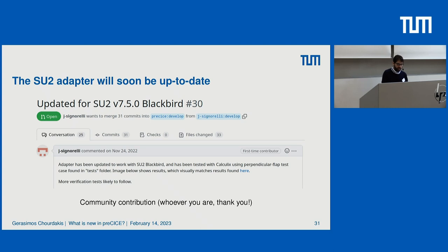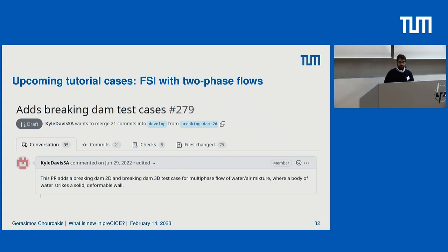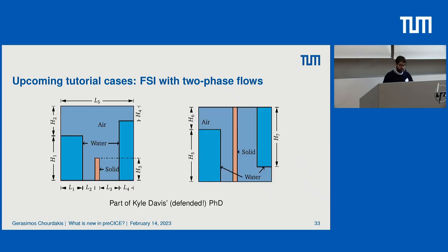So apart from OpenFOAM, you will also have another widely used and up-to-date solver. A new tutorial that is part of Kyle's PhD is an FSI with a two-phase flow — you may know about the dam-breaking example. The question is: can this work with fluid-structure interaction? What happens when the pillar in the middle is flexible? We will have this not only in 2D but also in 3D, where two piles of water collapse and hit a central flexible beam. We are confident we will publish this because Kyle has already done so in his PhD.